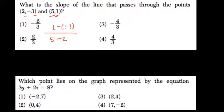1 minus negative 3 is 1 plus 3, or 4. 5 minus 2 is 3. Your slope is 4 thirds.